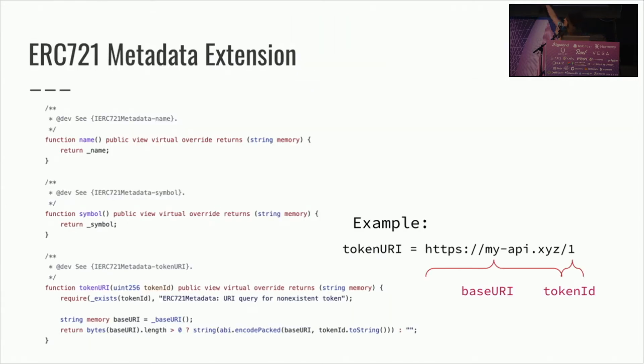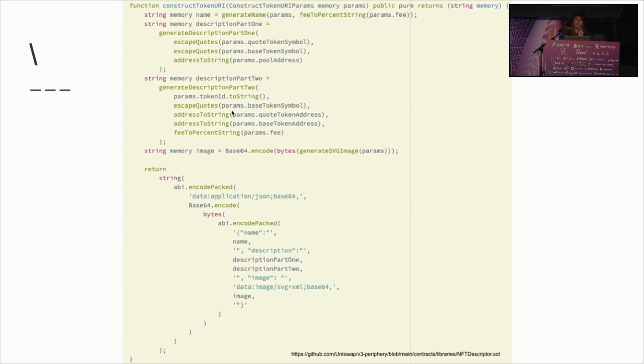I talked about tokenURI and what we typically return. However, in our code, instead of returning a base URL and a token ID, our tokenURI function calls into a function called constructTokenURI. From the token ID, we can get all the parameters from your financial position and inject them into some JSON. It's kind of like Mad Libs — we post a format for the JSON and the image, then put your specific data in. We put all the financial information, and you can see we're starting to form that data URL instead of an external link.